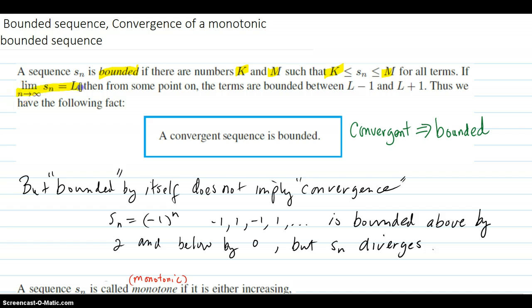If the sequence converges, that means for some n beyond a certain capital M, they approach some limit. So if we pick the epsilon to be one, then at some point, all the sequence terms are going to be within one of the limit. So your bounds in that case are L minus one and L plus one.